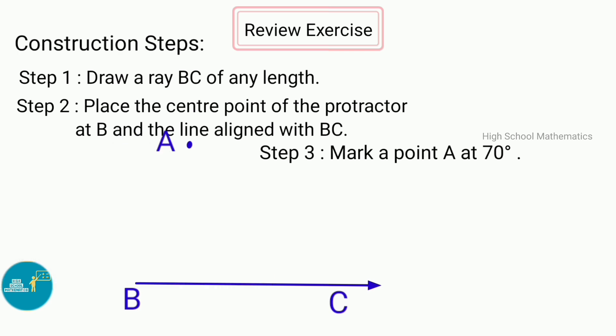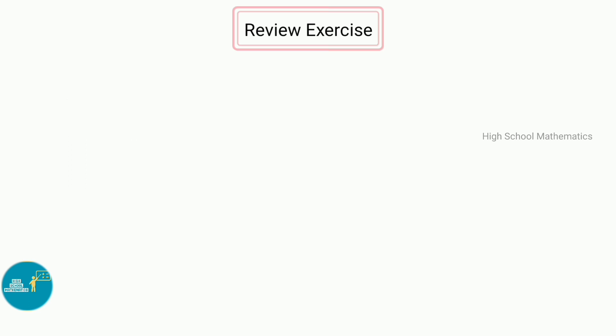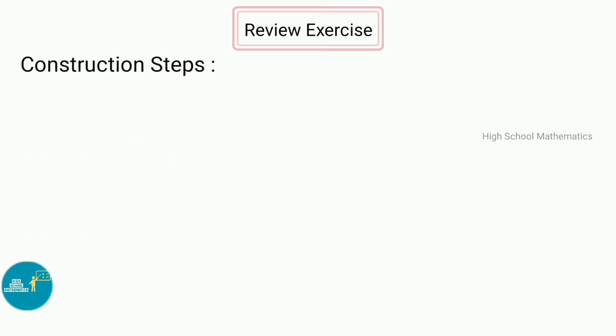Step 4 — join AB. Angle ABC is the required angle of 70 degrees.